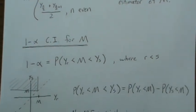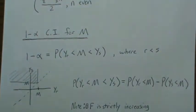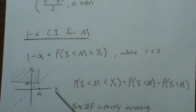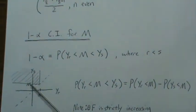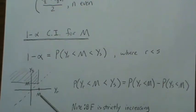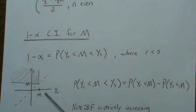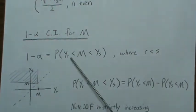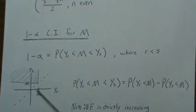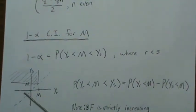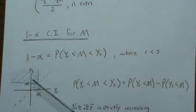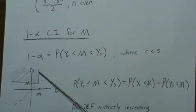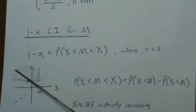So if we look at a picture of what's going on. If this is R and this is S and for the median, wherever it is on the axis, we want Y_R to be less than the median. So we're in this region, but we want Y_S to be larger than the median. So this is the area that we want to calculate.